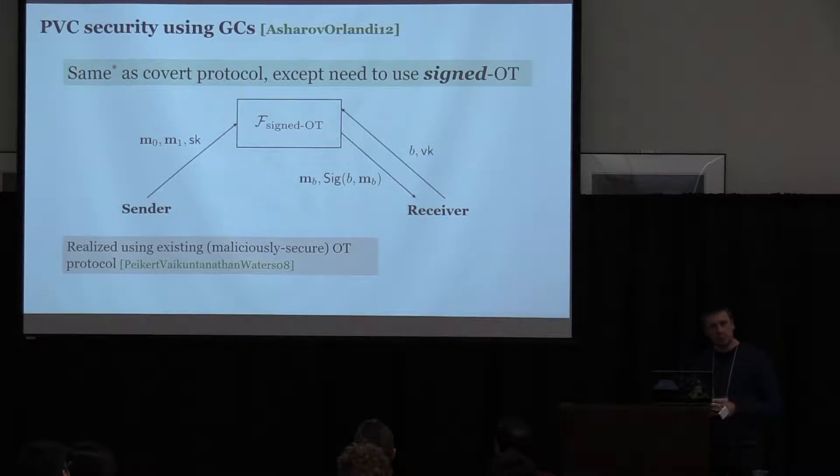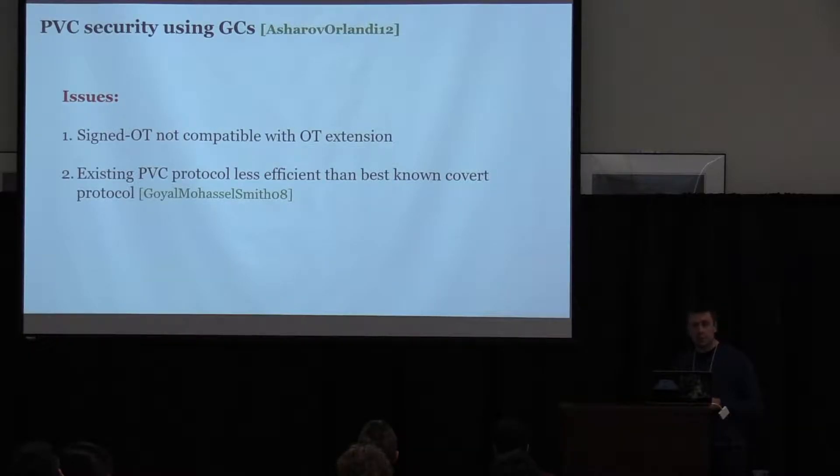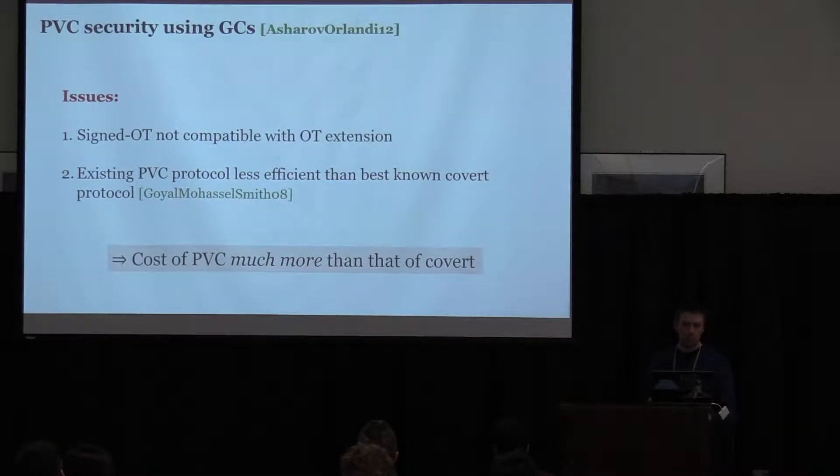So once we have this signed OT primitive, then we can do what I said. We can push this querying, this challenge inside the OT and Alice cannot avoid this because she provides, because her signature will come out in the end, right? And so, Ashara Ferlandi realized this primitive using, they build it based on Piker-Twan-Quinnathan-Waters, maliciously secure OT protocol. So, okay. So that's good. That's the big first step. There is issues with efficiency here. Well, it's an expensive protocol and kind of importantly, it's not compatible with OT extension. Okay. And everybody expects OT extension to work with their MPC, right? So, because of that, the cost of the Ashara Ferlandi protocol is not that great. It's fine. It's good in many cases, but you can do better.